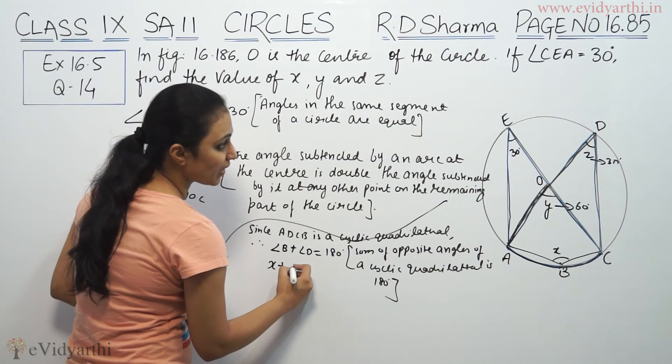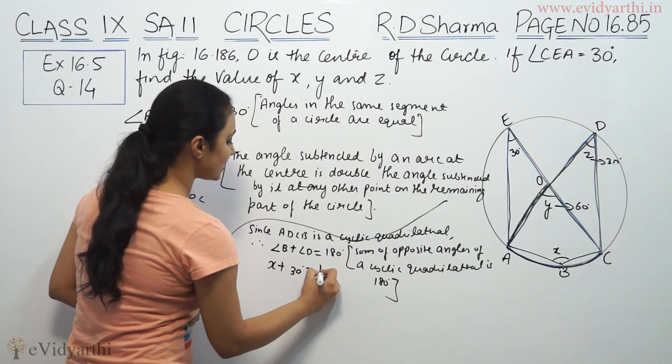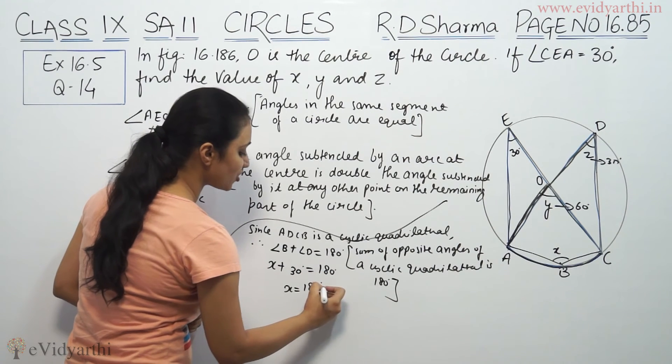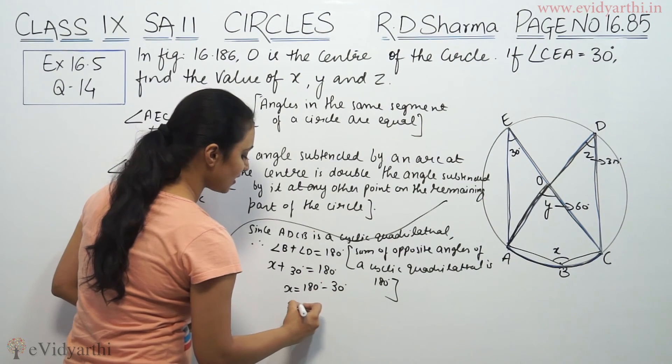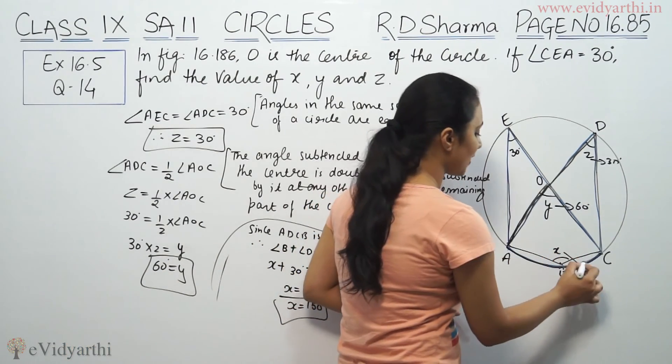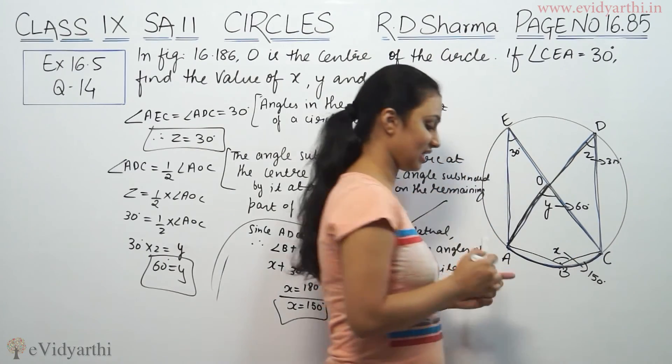So here we have angle B is X and angle D is 30 degrees, equals 180. So X is 180 minus 30, which means 150 degrees. So X's value is 150 degrees.